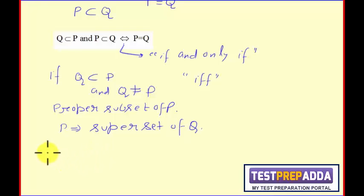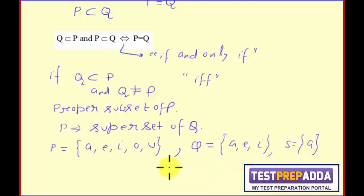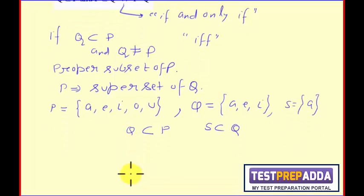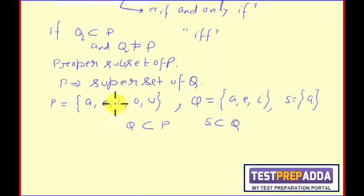Now, consider a set P as A, E, I, O, U - set of vowels - and set Q as A, E, I, and set S as A. Now, you can see S is the subset of Q, Q is the subset of P. And set S contains only one element. It is also called singleton set.